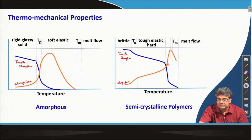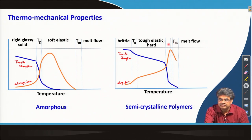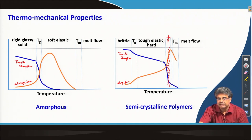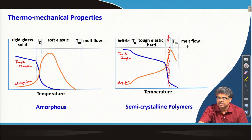Just before the Tm melting point, this region is basically where flow happens. The flow happens and the tensile strength drops drastically. Above the melting point, the polymer becomes like a molten solution.